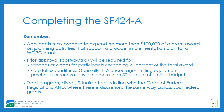ETA generally encourages limiting equipment purchases and renovations to no more than 50% of the project budget. You can go over that, but read that section of the FOA carefully to provide the evidence and documentation needed to make the case. You'll also want to treat program direct and indirect costs in line with the Code of Federal Regulations, and treat them consistently across your federal grants — that's a monitoring item.